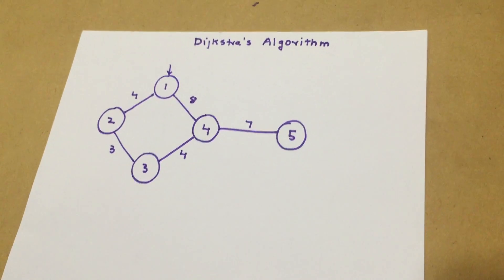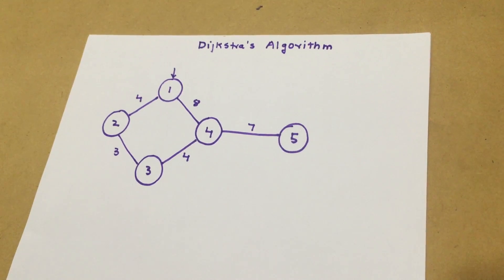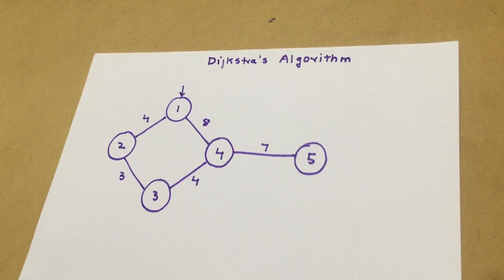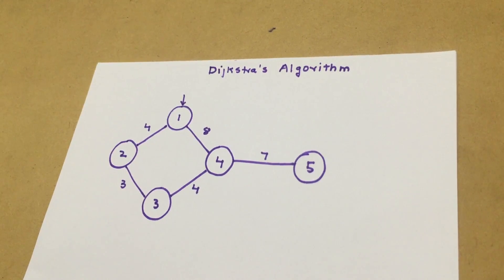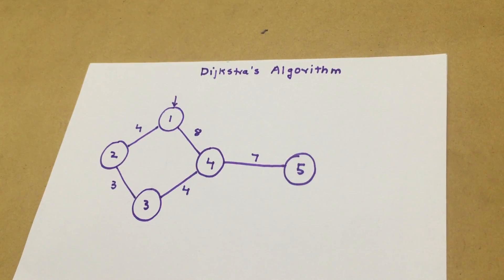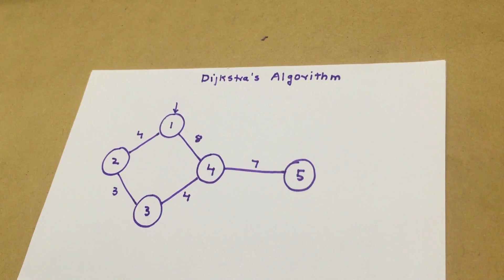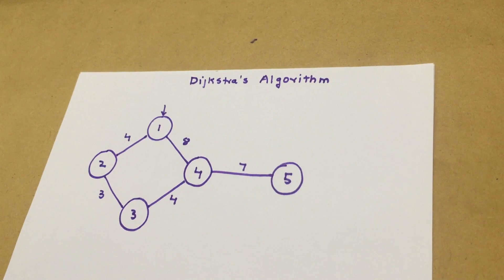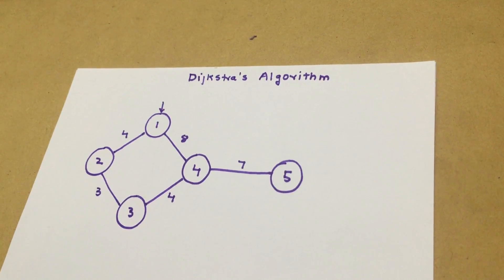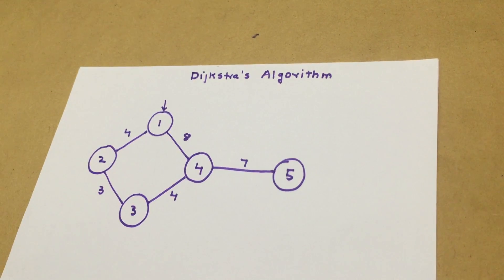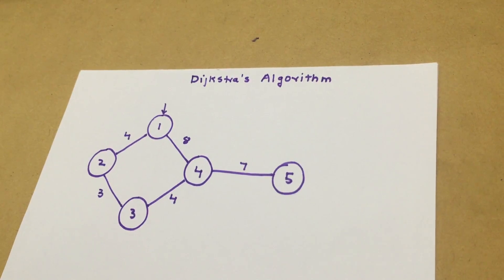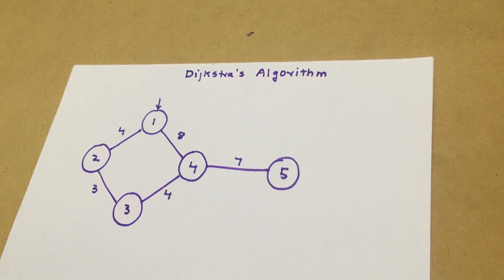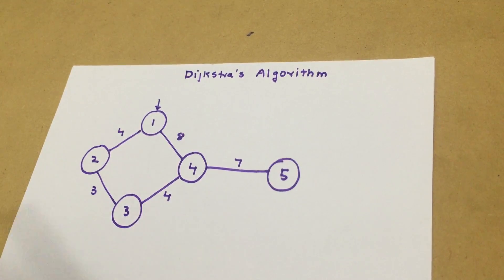Hi guys, today we're going to learn about Dijkstra's algorithm — and believe it or not, that is actually how it is pronounced. We'll get a question like this and be asked to find the shortest path. In computer networks, we have a sender and a receiver. The sender sends frames or information to the receiver, but between them there are many paths the message can take. This algorithm finds the shortest path from the sender to the receiver. If anyone has seen the TV show 'Numb3rs,' a mathematics professor uses this algorithm to find the most possible escape route a hijacking truck takes.